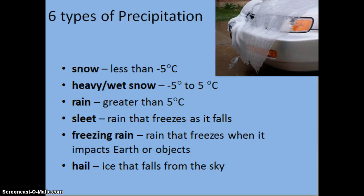There are six types of precipitation, each requiring specific temperatures to form. When it is colder than negative 5 degrees Celsius, we experience snow. Between negative 5 and 5 degrees Celsius, we experience heavy, wet snow. When temperatures are greater than 5 degrees Celsius, precipitation stays liquid and we experience rain. If rain freezes as it falls, we call it sleet. If rain freezes upon impact with Earth or an object, we call that freezing rain. Hail is chunks of ice that fall from the sky and create the most damage to cars and homes.